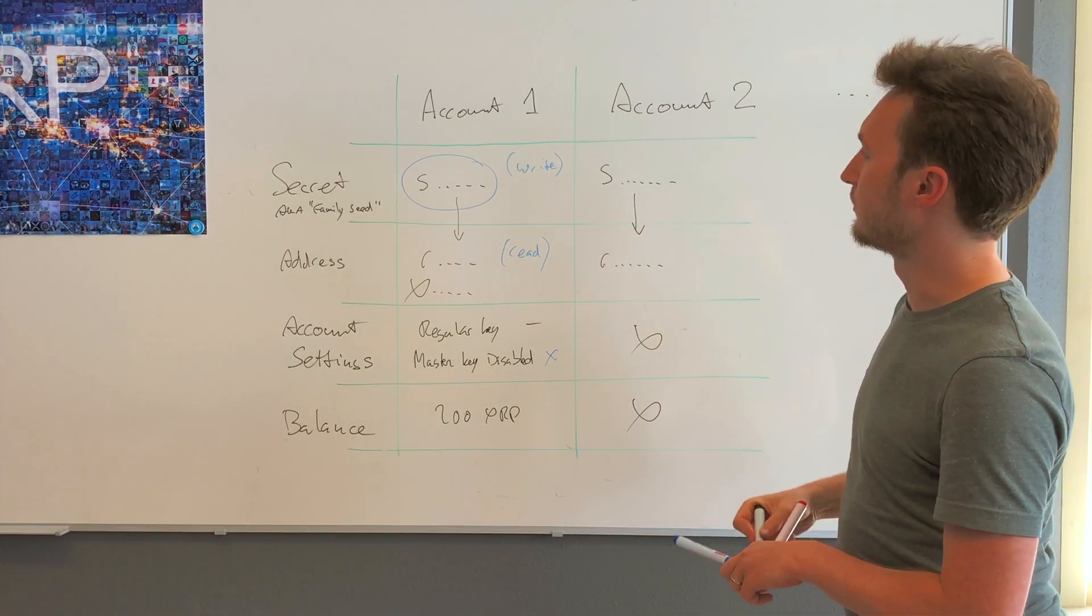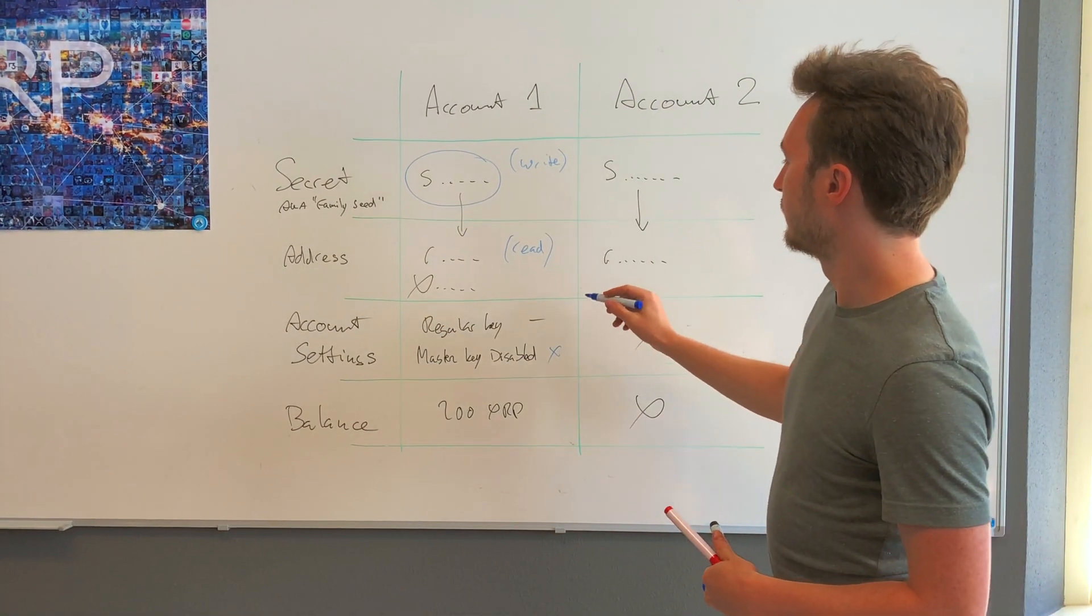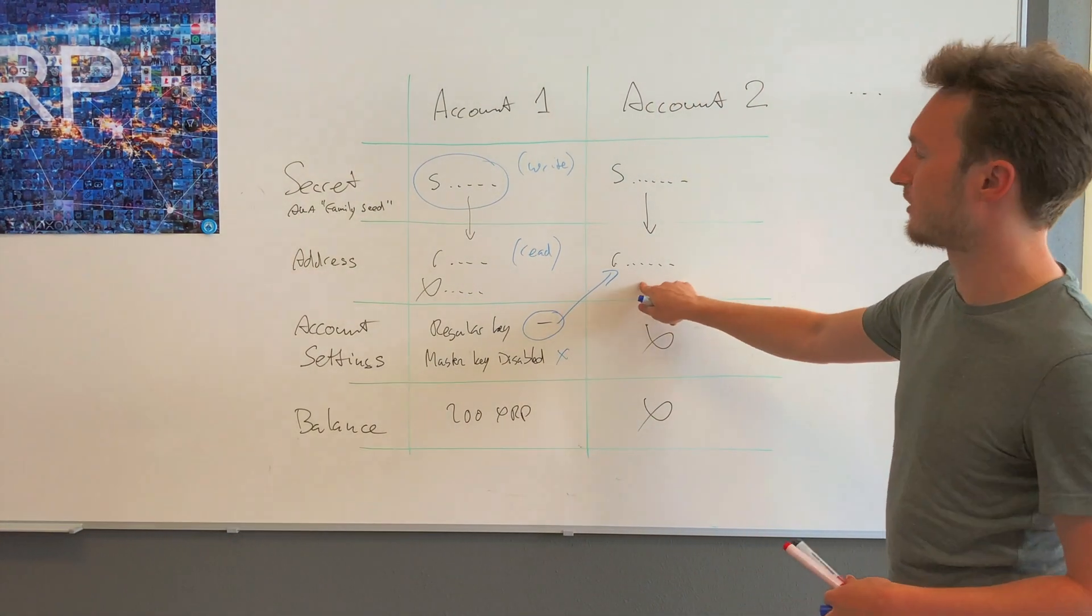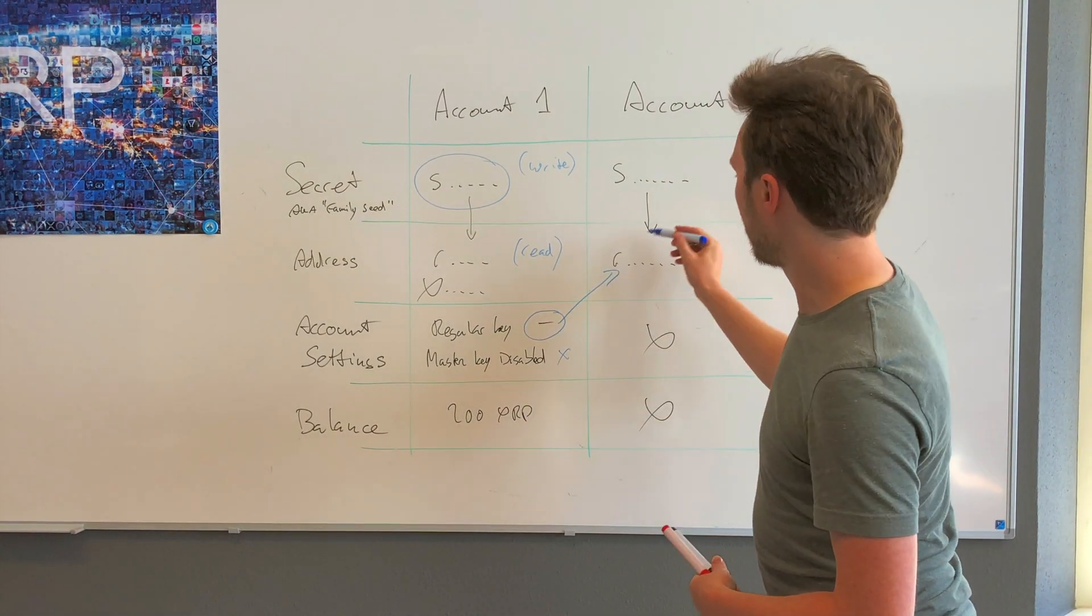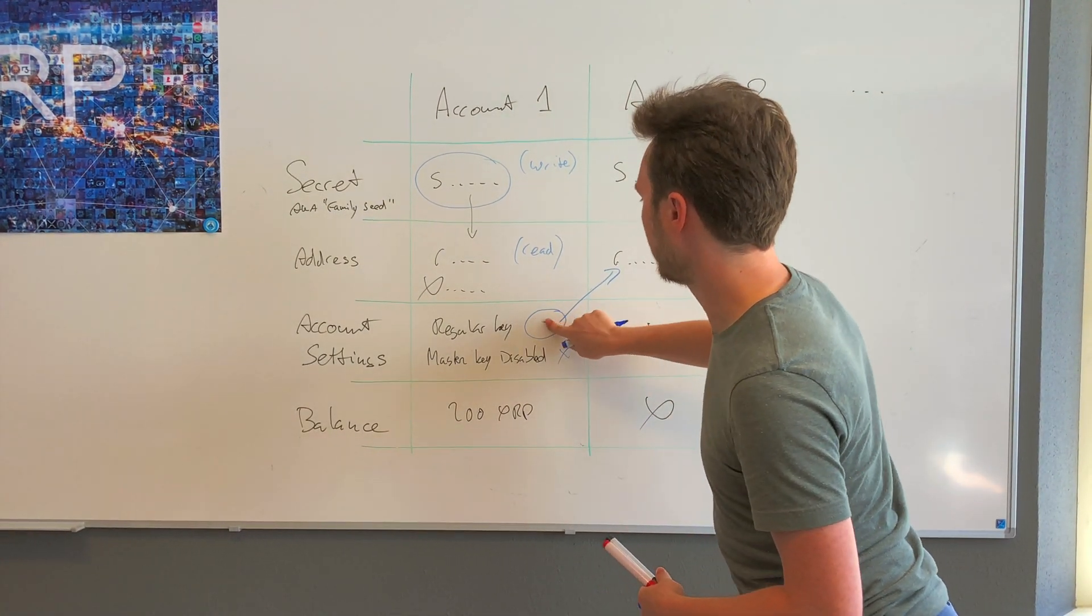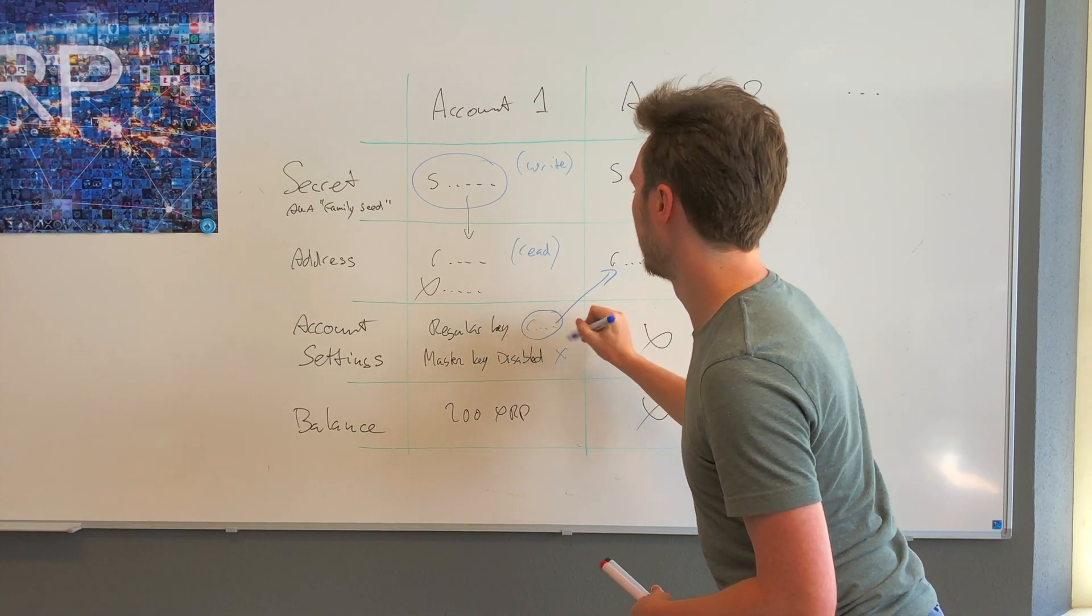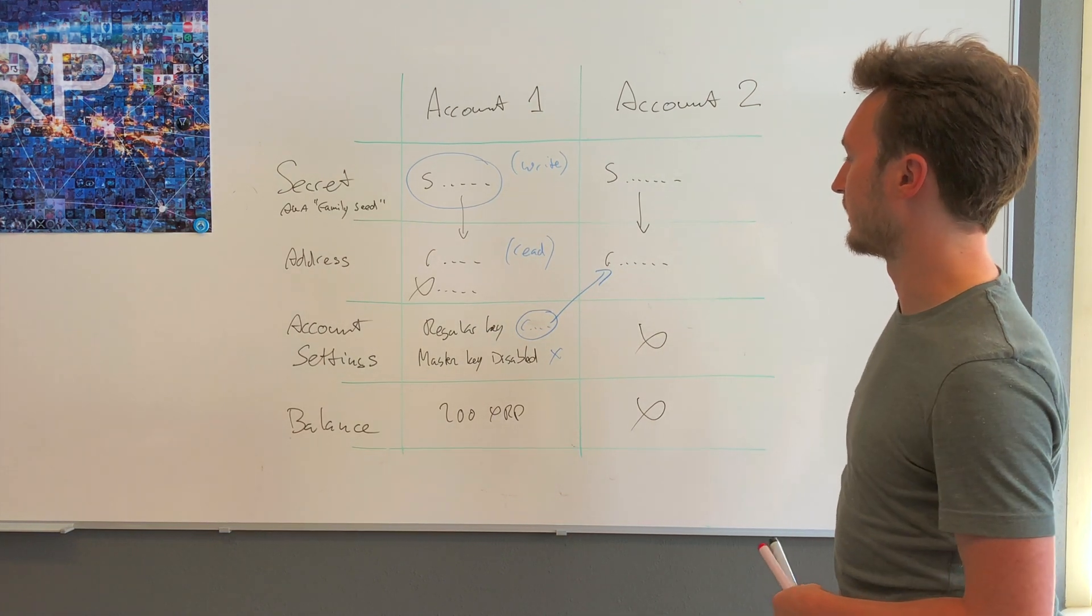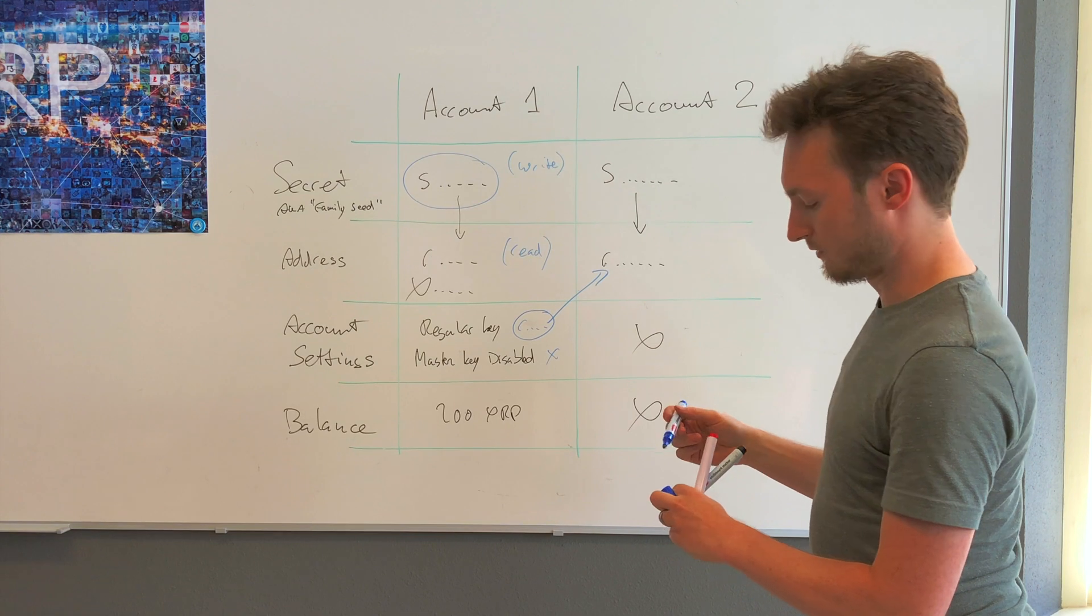What we can do is configure this account to have a regular key, and we're going to point it to the 'r' address of the newly generated account. Now, instead of nothing, the account settings for this address will contain the value of the 'r' address for this account.